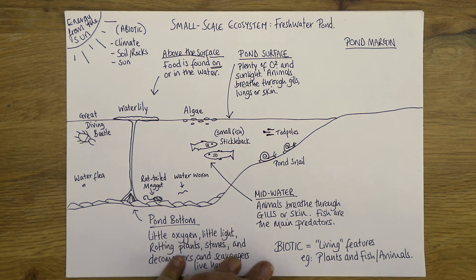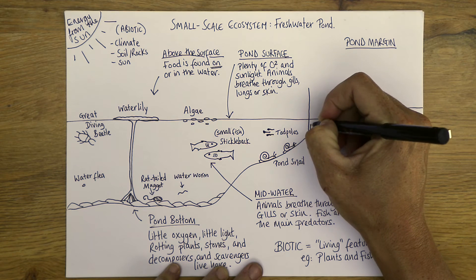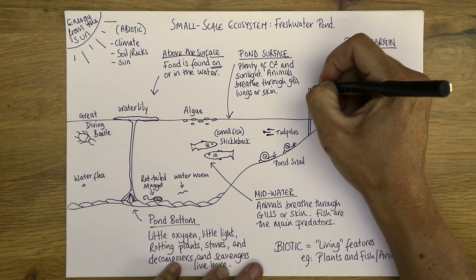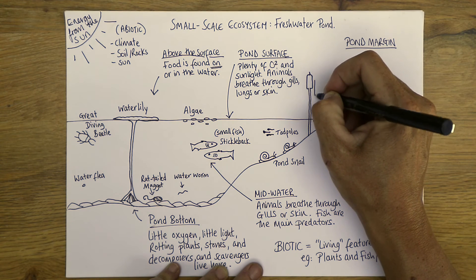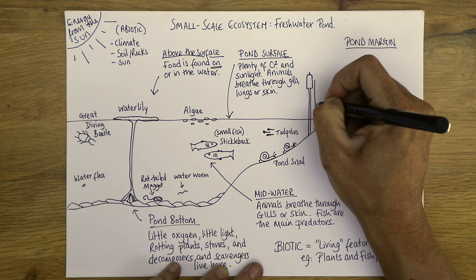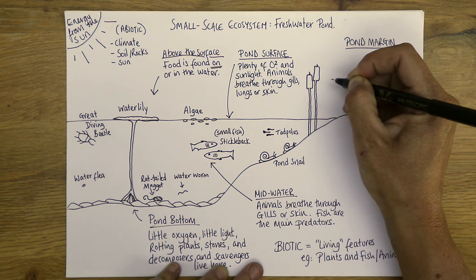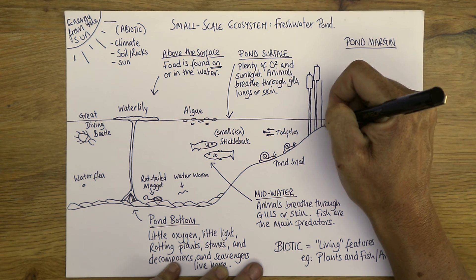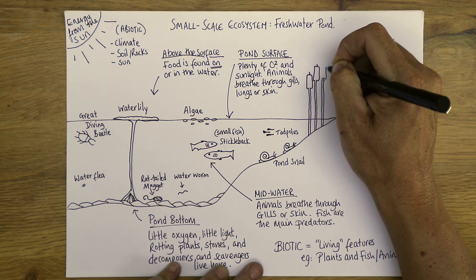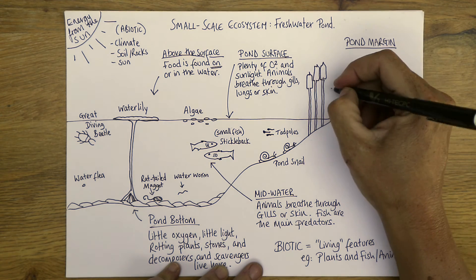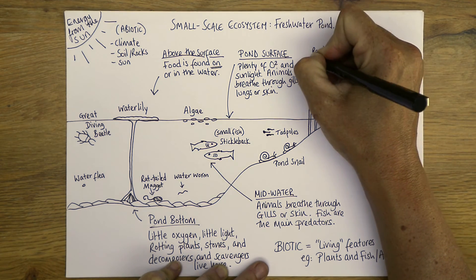The pond margin is generally home to most of the vegetation you might find. The first thing I'm going to draw is some bulrushes — native plants and vegetation. These are really spectacular; they can grow incredibly tall and provide food and security for different kinds of plants and animals. Bulrushes are a type of reed.